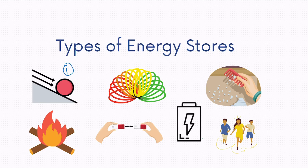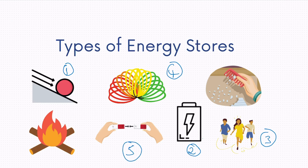The seven stores are: gravitational potential energy store, chemical energy store, kinetic energy store, elastic energy store, magnetic energy store, thermal energy store, and electrostatic energy store. Those images give you an example of each, and you can transfer from one store to another — you need to be able to identify these in the examples you are given.